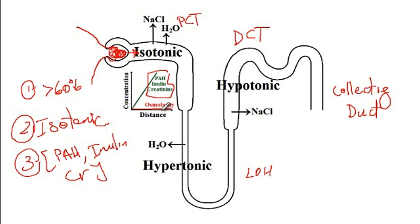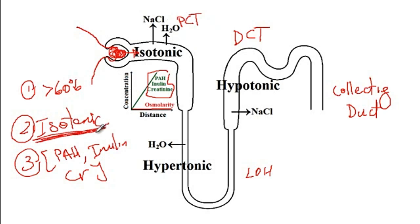So why does osmolarity remain the same in the proximal convoluted tubule even though water is being reabsorbed? The answer is that there is equal absorption of salt and water, so the urine remains isotonic.